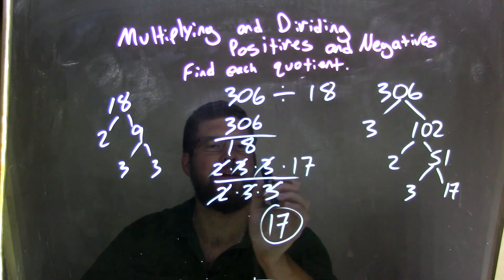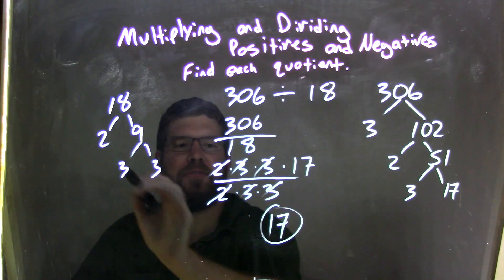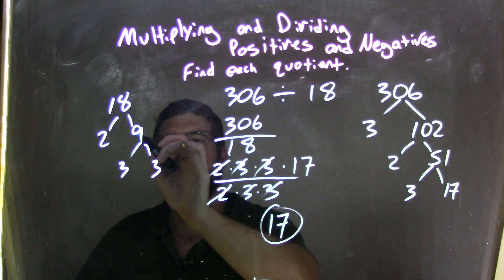So, we write it out here in the numerator. 2 times 3 times 3 times 17, all prime numbers, prime factorization. Now, we have 2 times 3 times 3, because 18, 18 is 2 times 9, and 9 is 3 times 3.